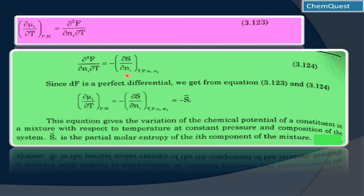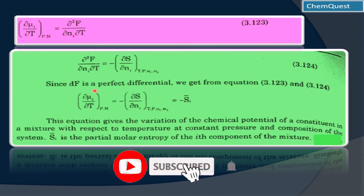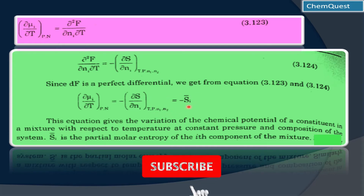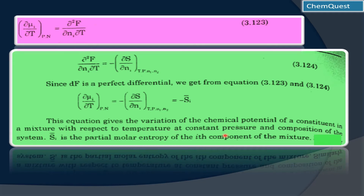Since we are differentiating with respect to n₁, the n₁ factor comes in the denominator on both sides. Since dF is a partial differential, we combine equations 3.123 and 3.124. The common factor in both equations is ∂²F / (∂n₁ ∂T), so equating them gives: (∂μ₁/∂T) at constant P and total N equals −∂S/∂n₁ at constant T, P, n₁, n₂, which equals −S̄ᵢ, the partial molar entropy of the i-th component.